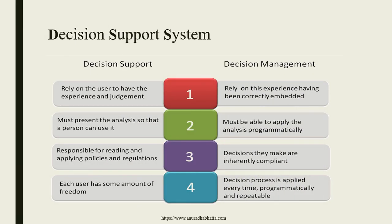This is the Decision Support System. There is decision support and decision management that takes place, coming in four levels. Each user has some amount of freedom and decision processes applied every time programmatically and repeatably at a lower level. Decision support is responsible for reading and applying policies and regulations. At the management level, decisions made are inherently compliant. Analysis must be presented so that a person can use it and apply it programmatically, relying on correctly embedded experience. The decision support system always helps improve the process of an organization.